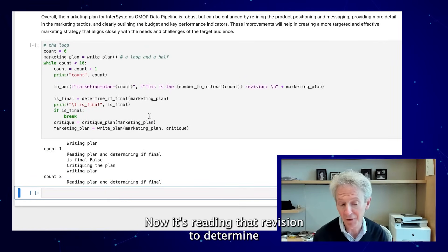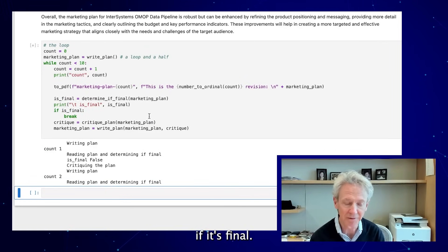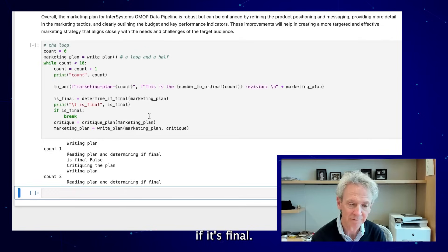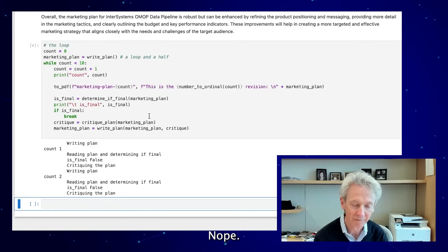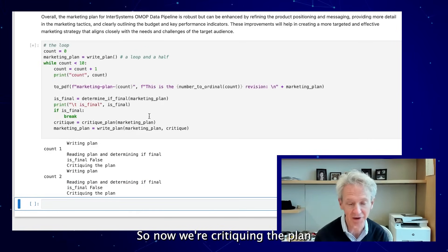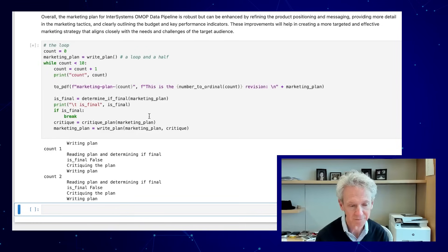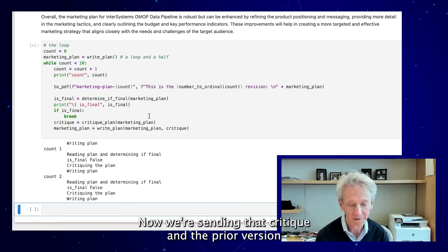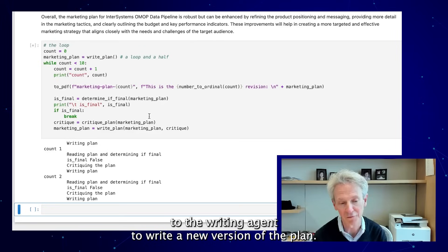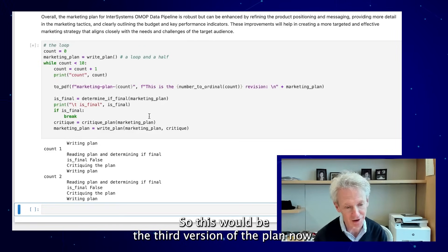Now it's reading that revision to determine if it's final. Nope, not final yet. So now we're critiquing the plan again, the new version of the plan. Now we're sending that critique and the prior version to the writing agent to write a new version of the plan. This would be the third version of the plan now.